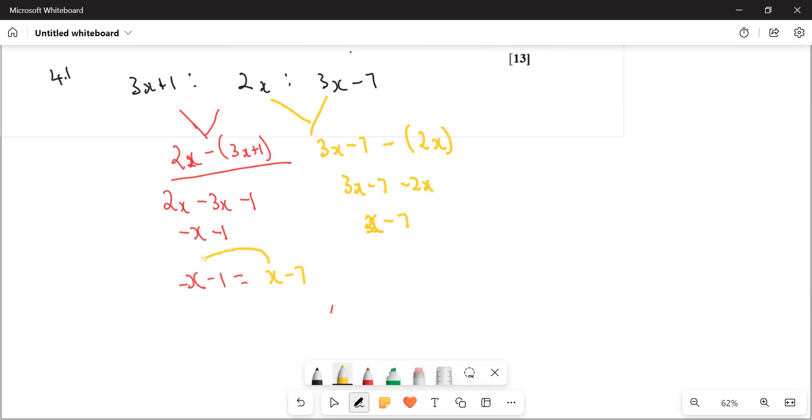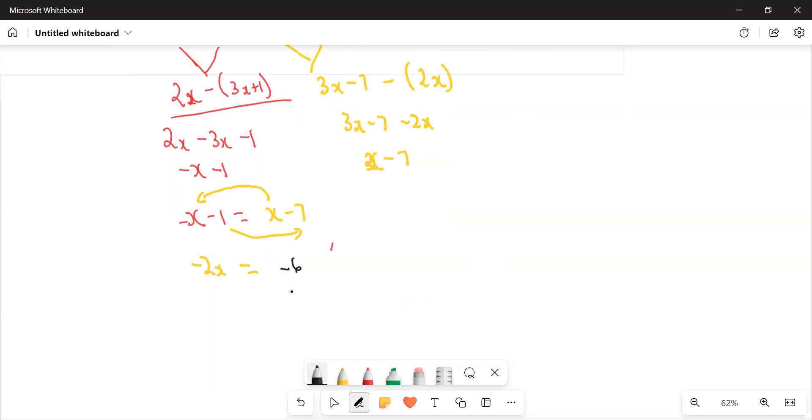And then take x to the other side: minus 2x. And then take negative 1 to the other side, it will be minus 6. Divide by negative 2 both sides. What is our x? X is equal to 3.